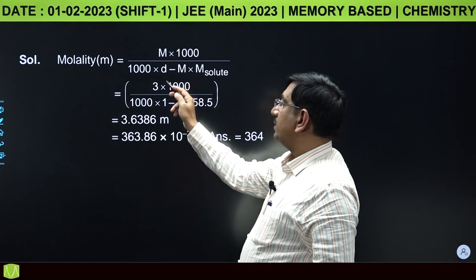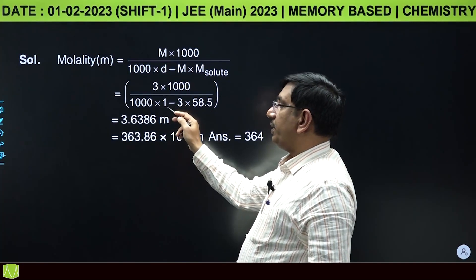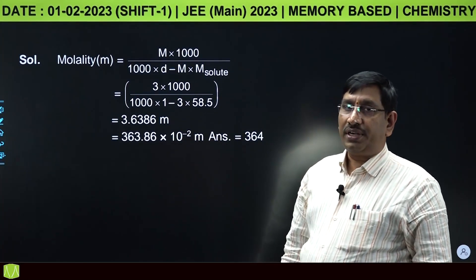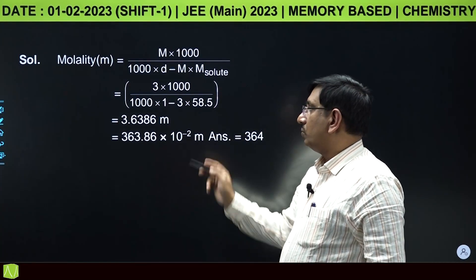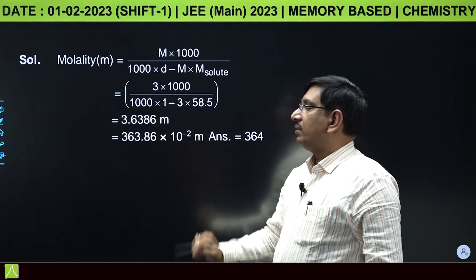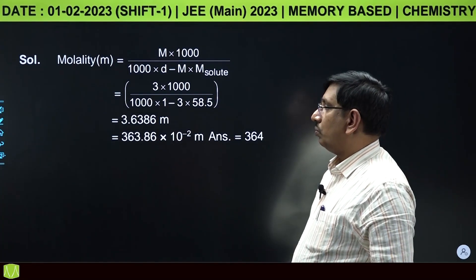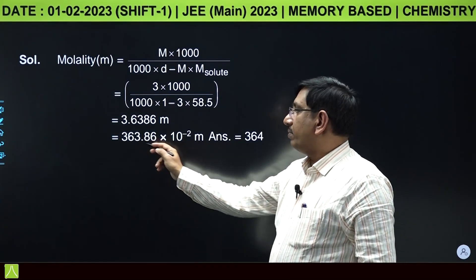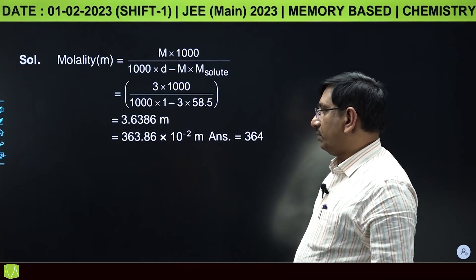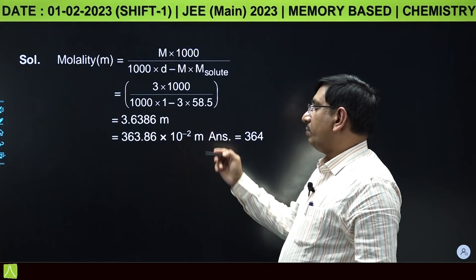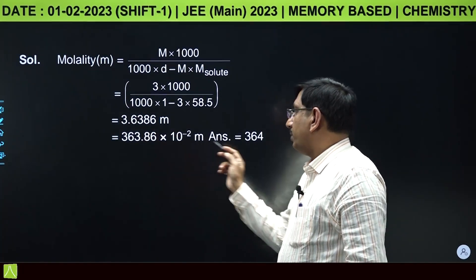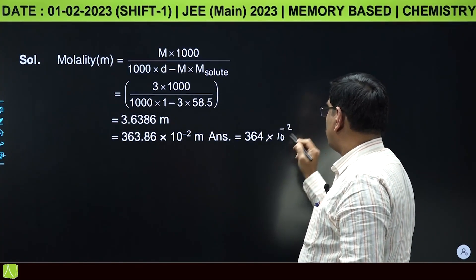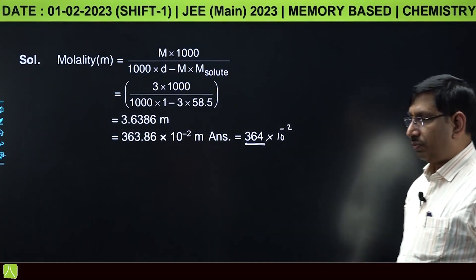Molality = molarity × 1000/(1000d - molarity × molar mass). So: 3 × 1000/(1000 × 1 - 3 × 58.5) = 3.6386 molal = 363.86 × 10-2. Rounded off: 364 × 10-2, so x = 364.